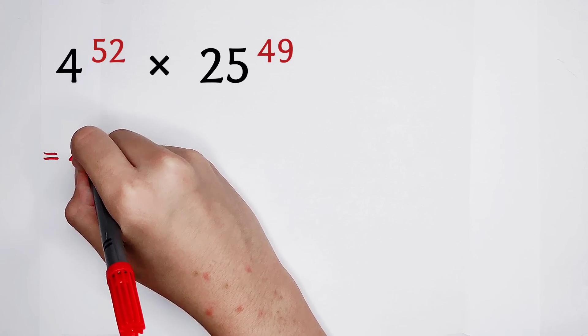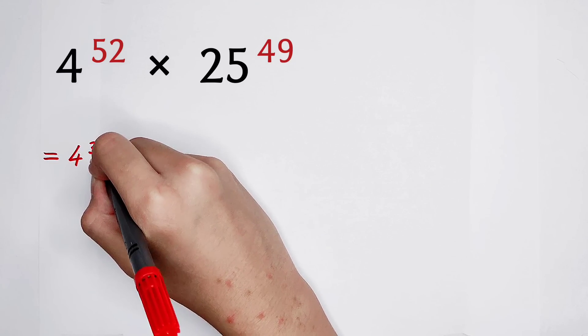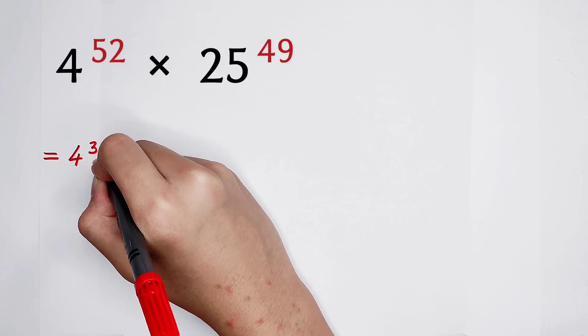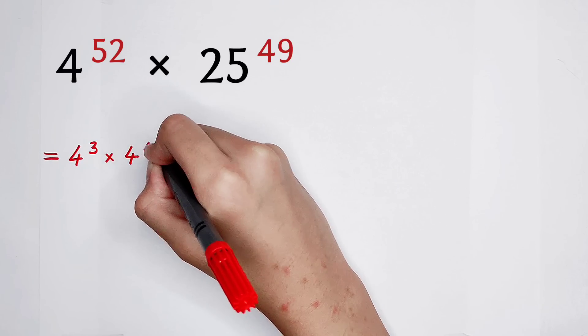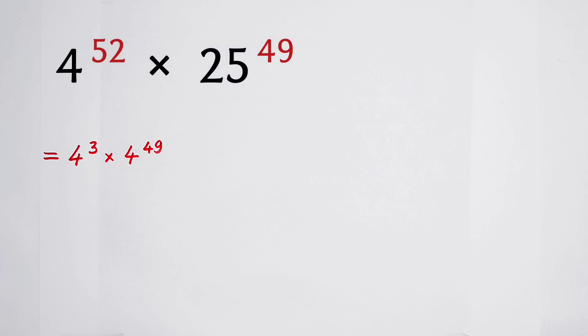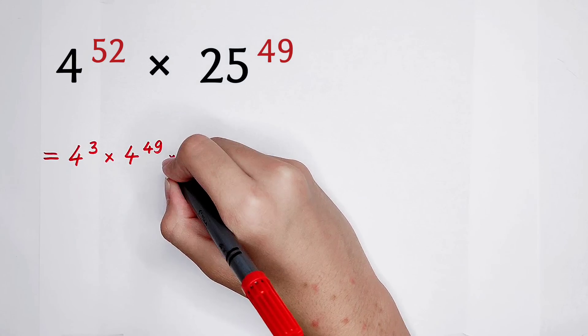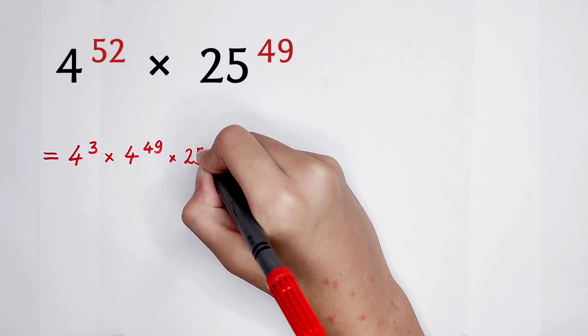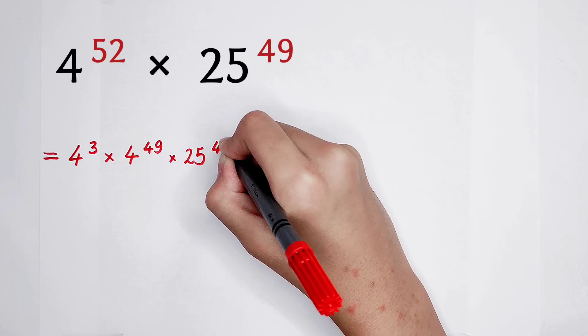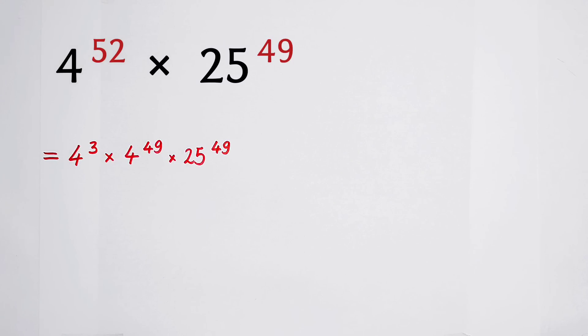4 to the power of 3, and then times, multiplied by 4 to the power of 49, and then multiplied by 25 to the power of 49. Okay, I have this answer.